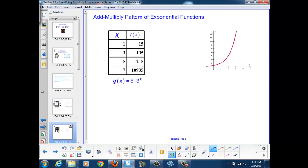For exponential functions, we see a different pattern emerge. Here, we've chosen the exponential function y equals 5 times 3 to the x. Here, the pattern is known as add-multiply. And we'll see that when I am consistently adding the same value here, plus 2, plus 2, and plus 2, I end up changing my y values by a factor of 7. 15 times 7 is 135. If I multiply 135 by 7, I end up with 1215. And if I multiply 1215 times 7, I end up with 10,935. You can check me on your calculators.